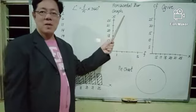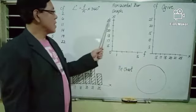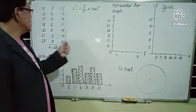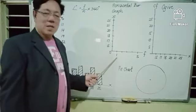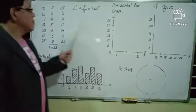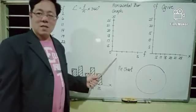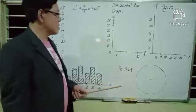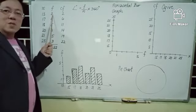Now we construct the horizontal bar graph. For the horizontal bar graph, we write the frequency in the horizontal axis and the scores in the vertical axis, from the lowest (15) in order as they appear in the frequency table. I use 1-unit intervals for the horizontal axis, denoted by F for frequencies, because the lowest and highest frequencies are 2 and 5 respectively.